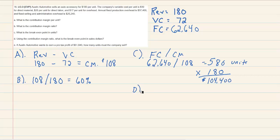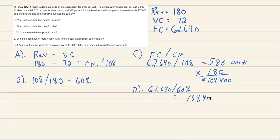We can actually calculate the break-even point in dollars a second way. In Part D, it says using our CM ratio, what is the break-even point in sales dollars? We plug in our fixed cost of $62,640 and divide by the contribution margin ratio. If we do that, we get $104,400 — again the same answer. We can use the break-even point multiplied by the dollar sell price per unit, or use the CM ratio. Either way, you get the exact same thing.